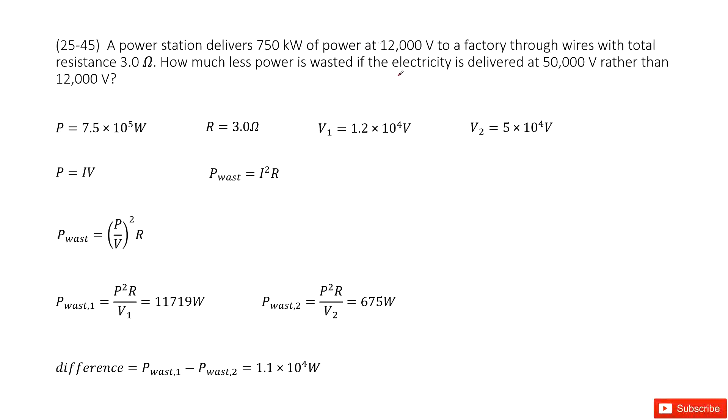And the initial voltage is given as 12,000 volts, and the wire's resistance is also given as R. We can consider how much less energy is wasted if the electricity is delivered at 50,000 volts rather than the 12,000 volts.